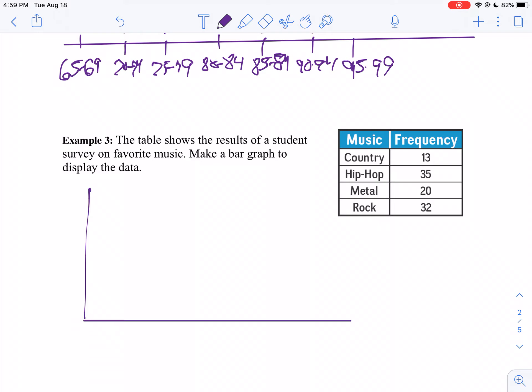When you have categorical data, your bars are going to be separated by spaces. So I'm going to abbreviate here. I'm going to go C for country, H for hip hop, M for metal, and R for rock. My biggest data point is 35.